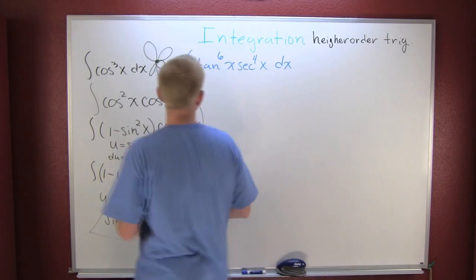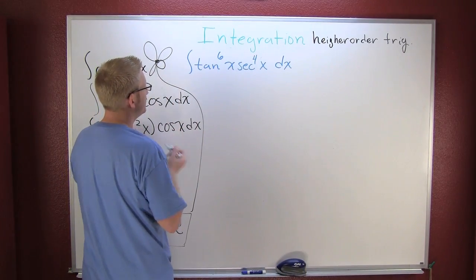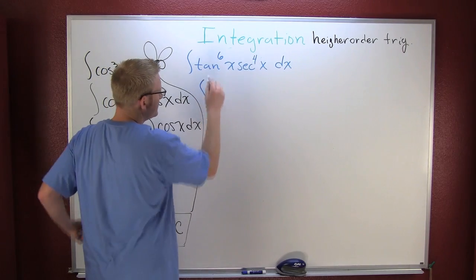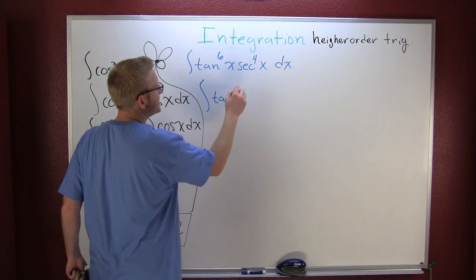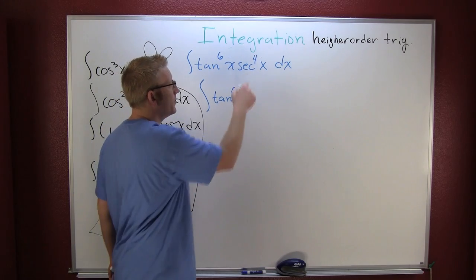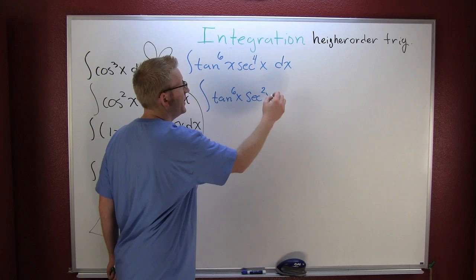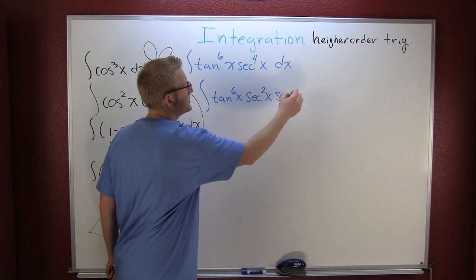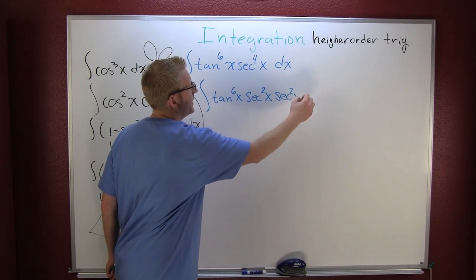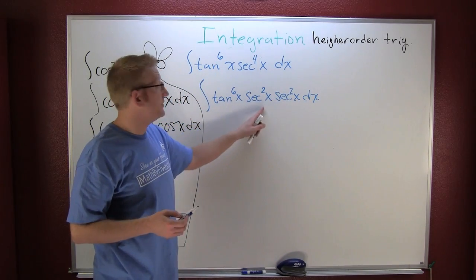So then we're trying to produce a secant squared. We're going to go through and take a look at that. Tangent to the six x, I'm going to break one off there: secant squared x secant squared x dx.